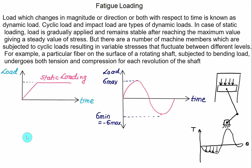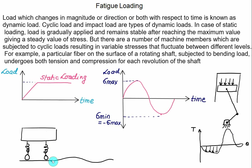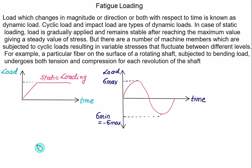A car suspension uses springs in the front and rear. As road conditions change, the spring gets compressed and expands again, causing the forces in the spring to continuously vary between tension and compression — this is a fatigue loading problem. Similarly, the keyway of a shaft connected to power transmission experiences variable torque and must be designed for fatigue loading. Many machine parts undergo cyclic loading with variable stress.